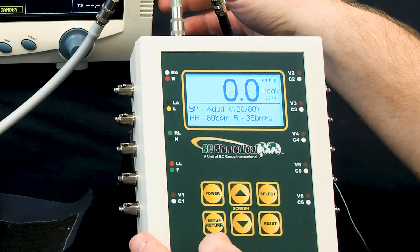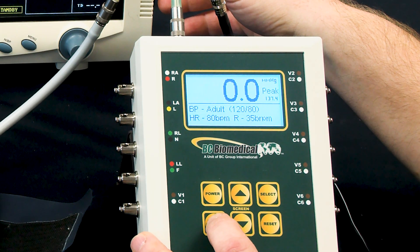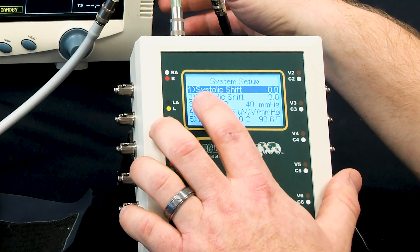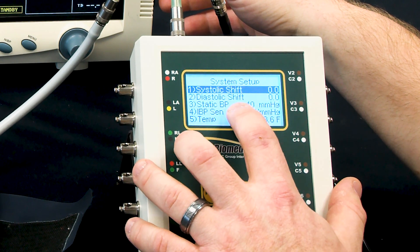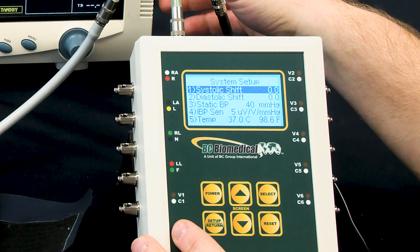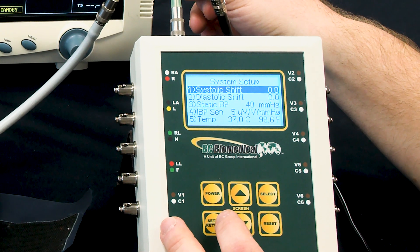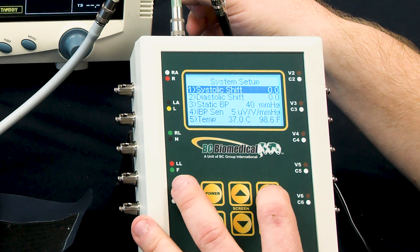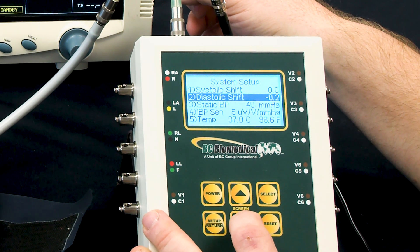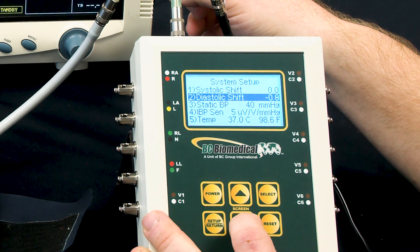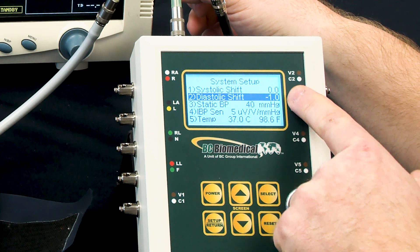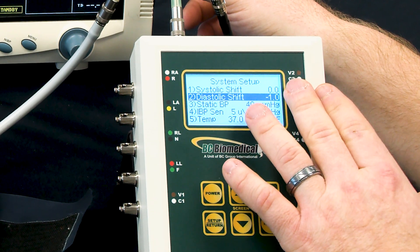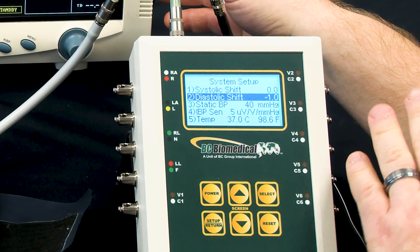It's easy to set those offsets by going into the setup menu. And in this case, we can see that the systolic and the diastolic shift are both set to zero. So if I really wanted that diastolic measurement to be exactly 80, I could go into my diastolic shift, maybe set it up for minus one. Now these measurements aren't exactly one to one, what we set in the screen here as far as adjusting the pressure.